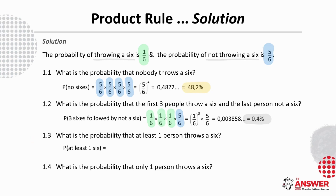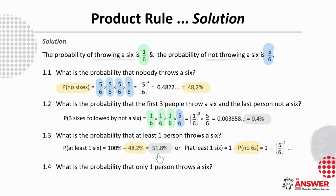What about the probability that at least one person throws a 6? This means 1 or 2 or 3 or all of them throw a 6, so it's helpful to think of the complementary option — that is, no 6s. We calculated this probability in the first part, so using complementary events, the answer is 51.8%.